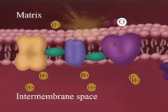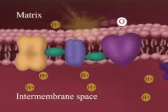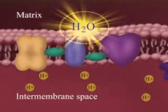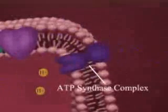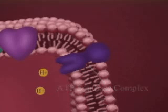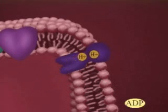Protons can diffuse back across the membrane, but only through channels created by the enzyme ATP synthase. This enzyme uses the energy of the diffusing protons to bind a phosphate group to ADP, producing ATP.